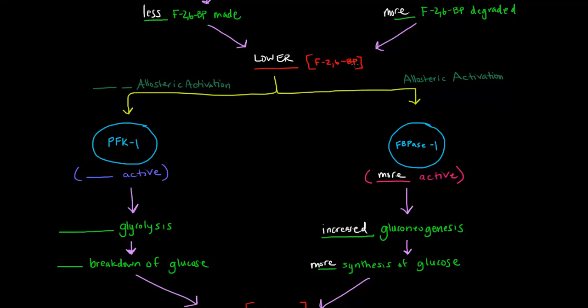This lower fructose-2,6-bisphosphate concentration - if there's less of it around, that means there's a lack of allosteric activation of PFK-1, which is involved in glycolysis. So this is going to be less active than it normally would be. Less active means decreased glycolysis. If we have decreased glycolysis, that means we have less breakdown of glucose. We're not breaking down glucose for energy as much.